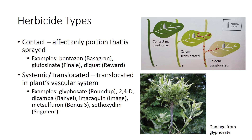Systemic herbicides move in the xylem that conducts water and nutrients, or they move in the phloem with the sugars. Xylem-translocated herbicides move upward and outward — they cannot move down the plant — and affect older leaves first. Phloem-translocated herbicides become distributed throughout the plant. Immediate effects include contact burn and distortion, and chronic effects include inhibition of new shoot tips, young leaves, and buds. Systemic herbicides generally are slower-acting and kill plants over a period of days. Examples of systemic herbicides include glyphosate, 2,4-D, dicamba, metribuzin, metsulfuron, and sethoxydim.